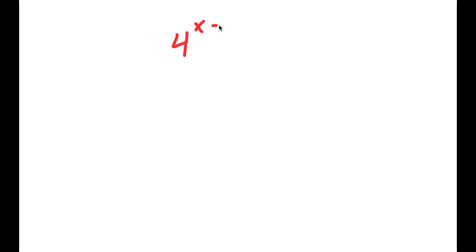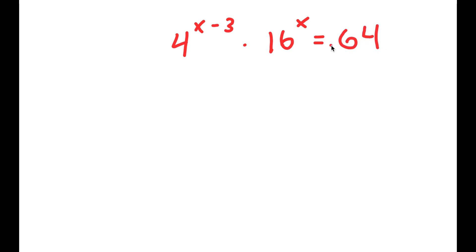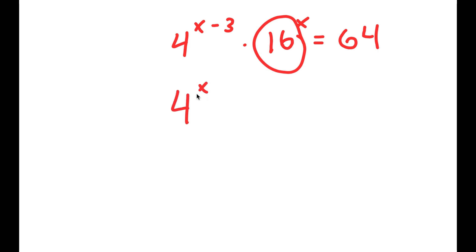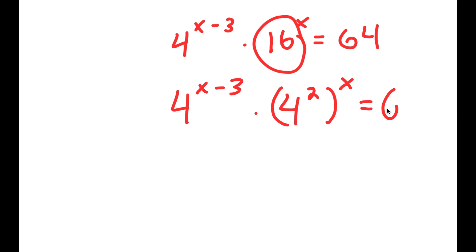In this problem, I have 4 to the power of x minus 3 times 16 to the power of x equals 64. To solve this, I'll start by rewriting 16 as 4 squared, so now I have 4 to the power of x minus 3 times 4 squared to the power of x equals 64.